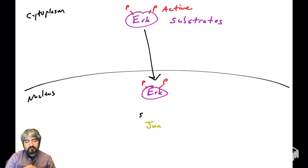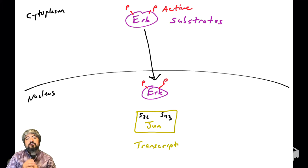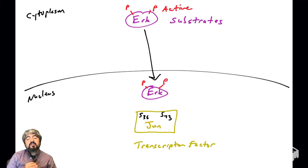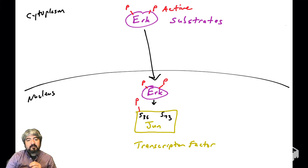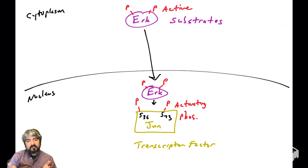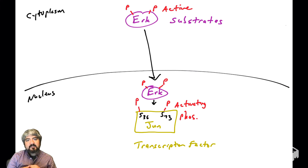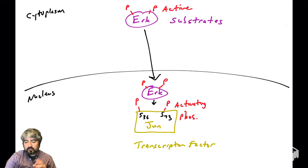Let's introduce our first transcription factor called JUN, also sometimes known as c-JUN. JUN is a transcription factor, and I've drawn here a serine at position 36 and a serine at position 73. ERK can phosphorylate JUN and activate it — these are activating phosphorylation events. When JUN is active, it can go and turn on genes.